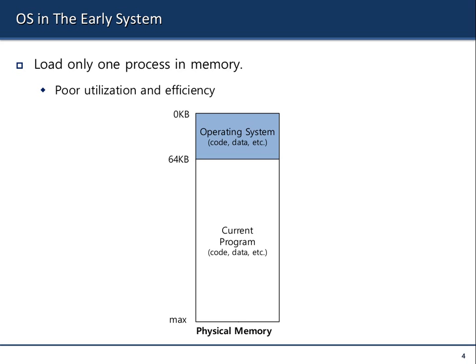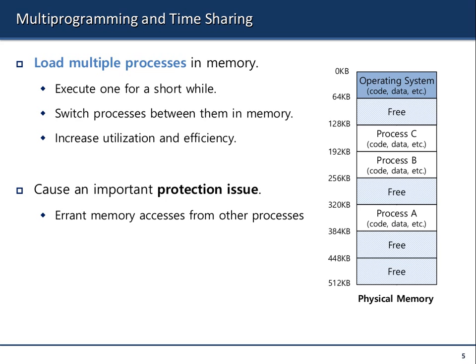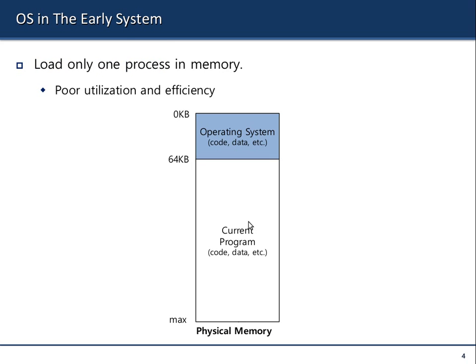The problem was poor utilization and efficiency, because only a single process was in memory at a time. If you wanted many processes, the system would swap them out and replace with the next. Only one user program was in main memory at a time. As hardware improved, demand for multi-programming and time-sharing grew — that was single-programming: just one process.